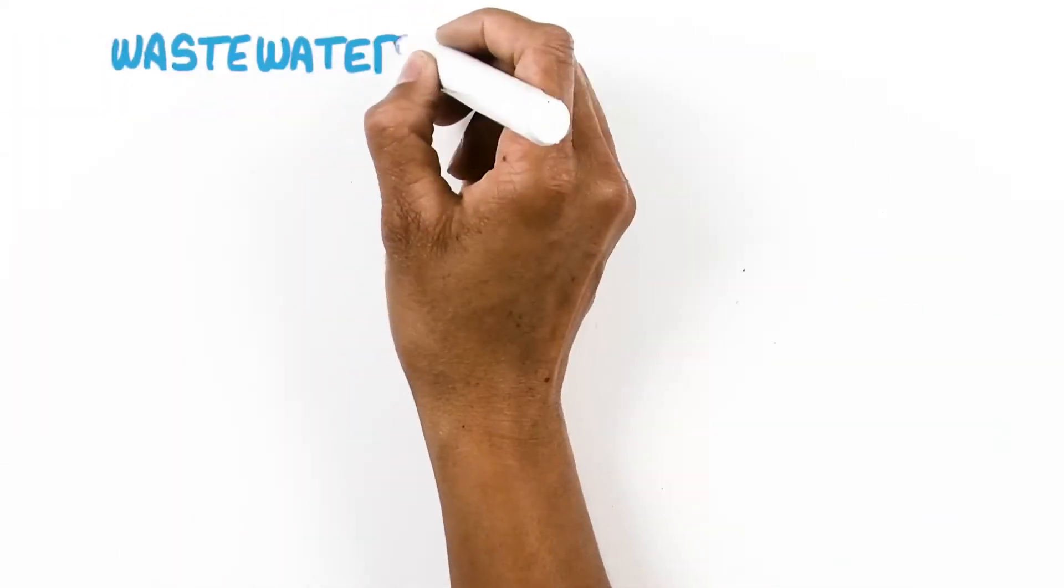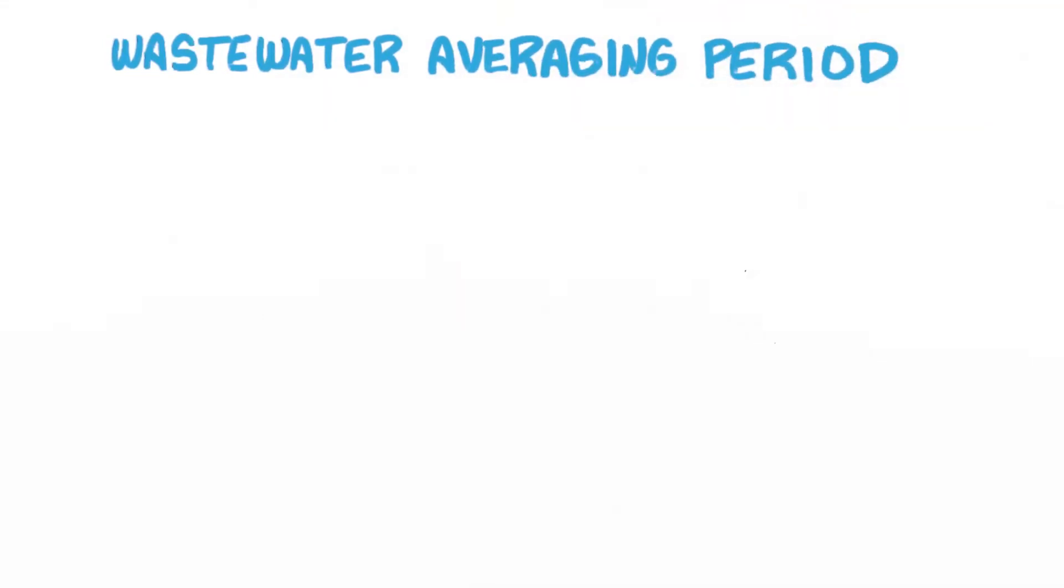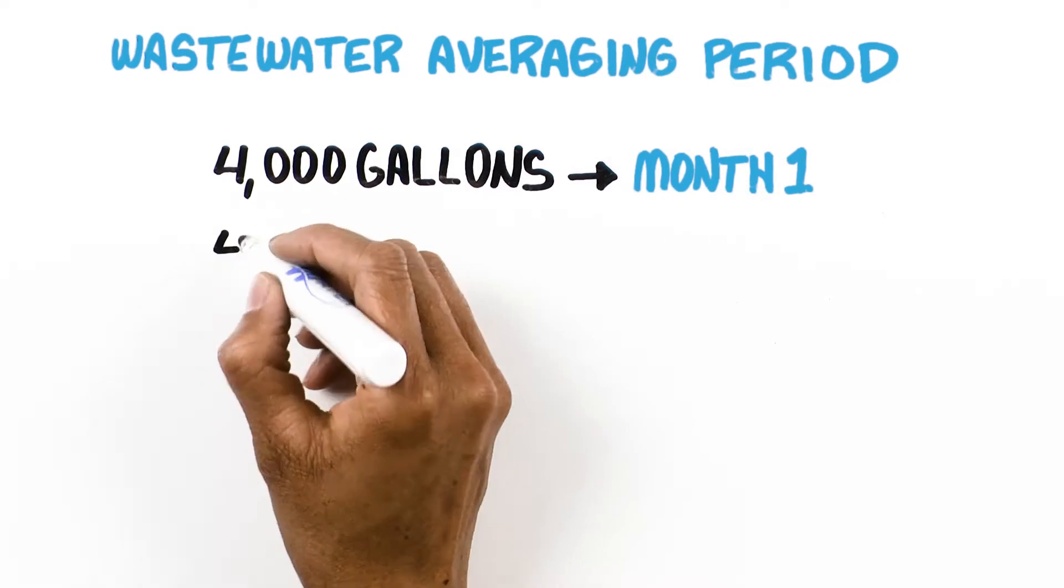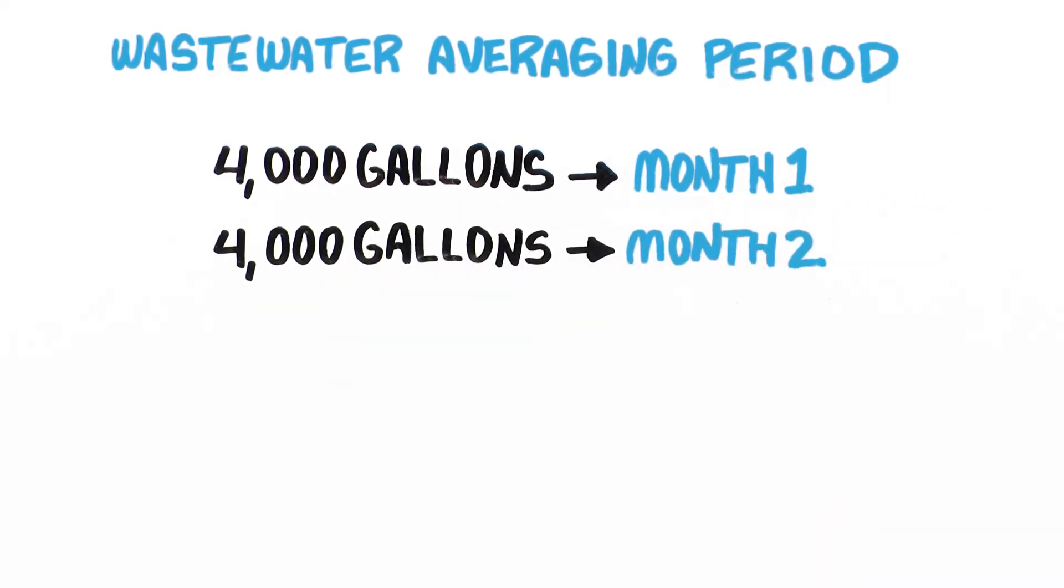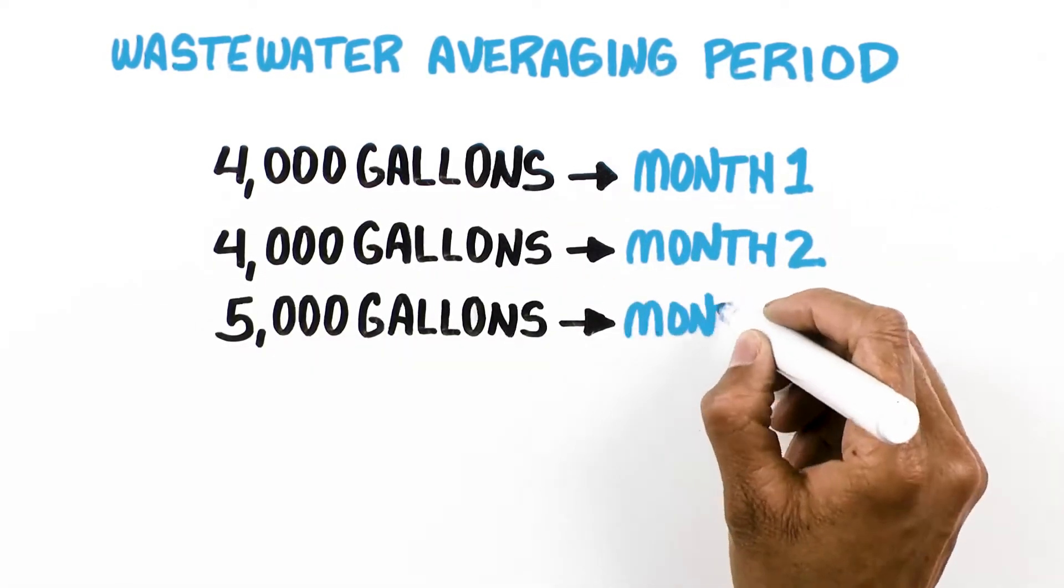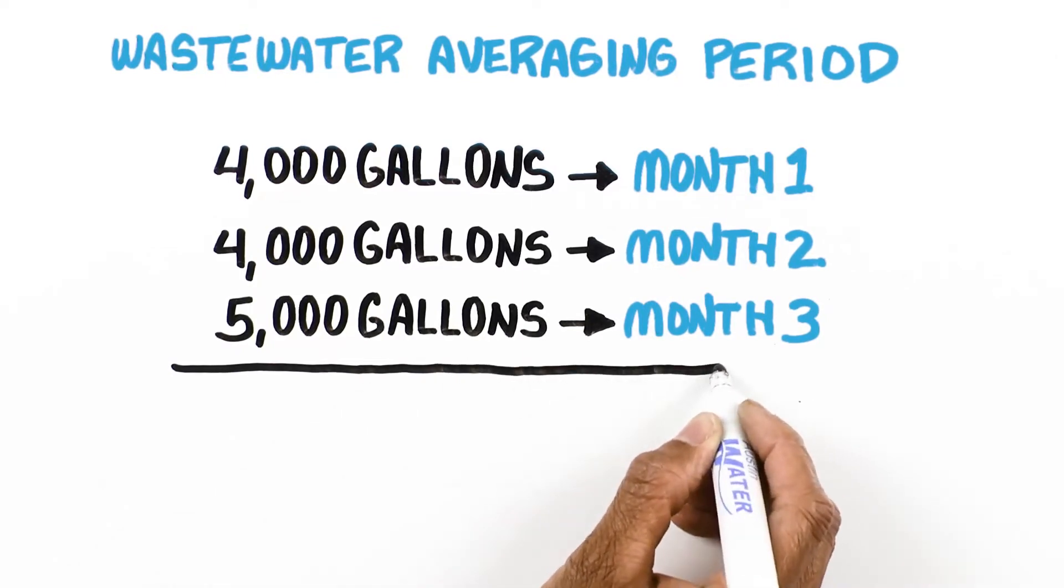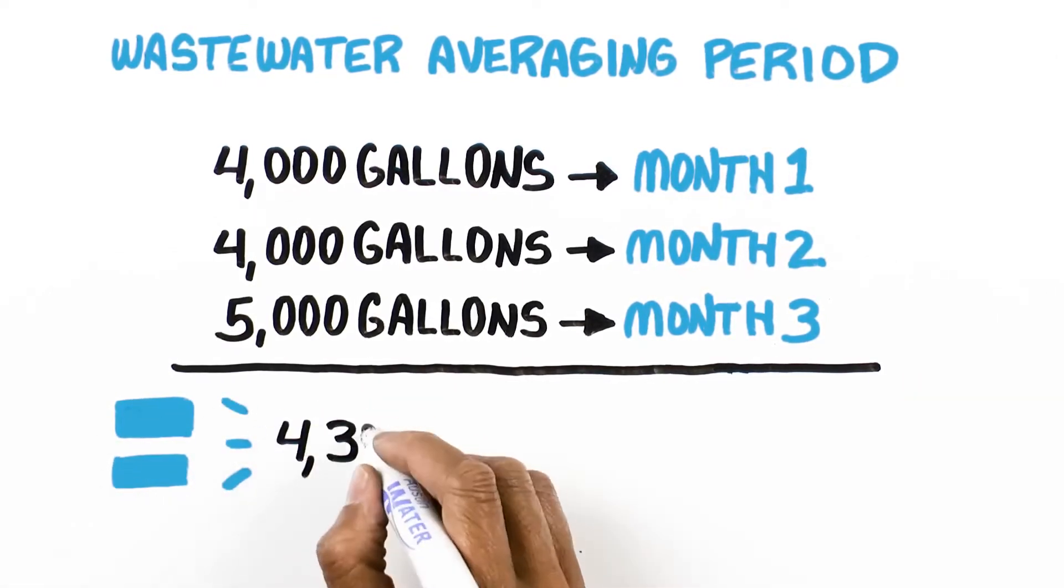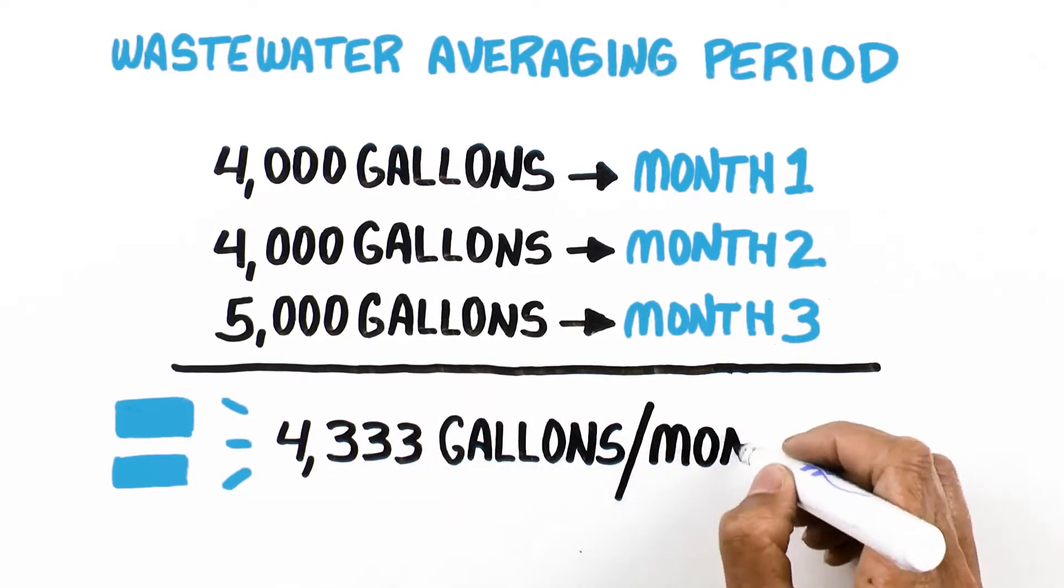For example, during your wastewater averaging period, you use 4,000 gallons of water in month one, 4,000 gallons in month two, and 5,000 gallons in month three. After adjusting for the number of days in a month, your wastewater average is 4,333 gallons per month.